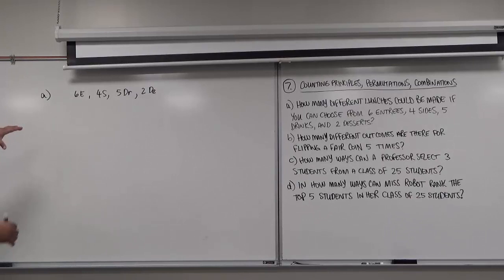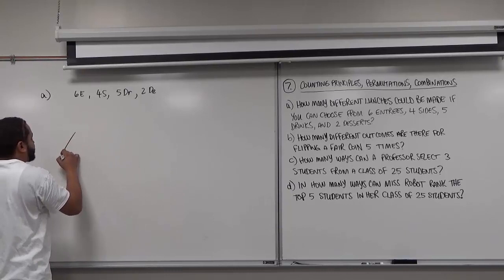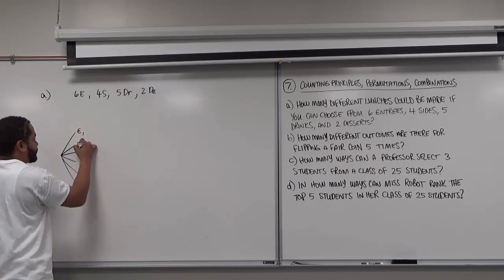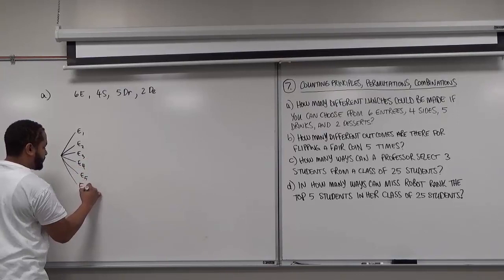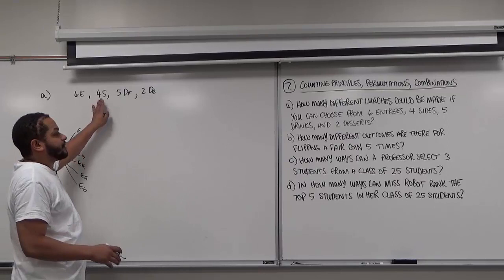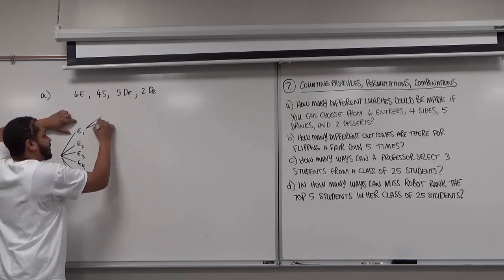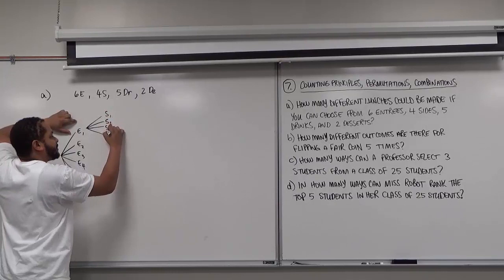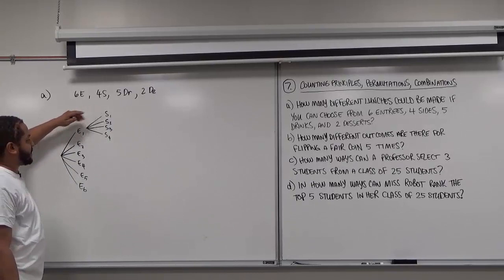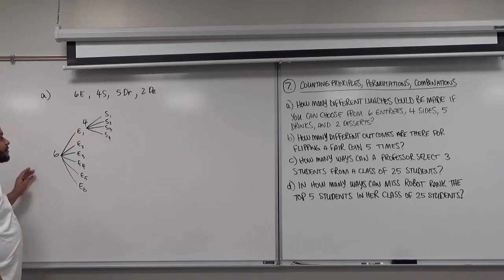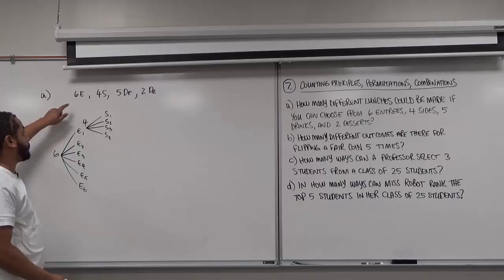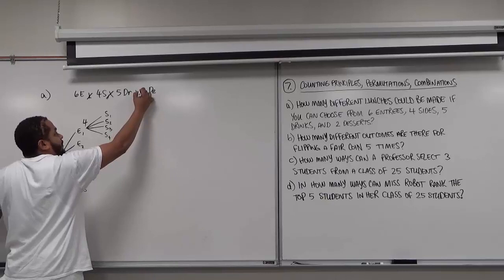If we have 6 entrees, we have 6 different ways we can pick an entree — entree 1, entree 2, entree 3, entree 4, entree 5, and entree 6. From each entree we could select a different amount of sides. We have 4 different options: side 1, side 2, side 3, side 4. Looking at entree 1 and the sides, there are 6 possible entrees and 4 possible sides. Instead of making a full tree diagram, we can just multiply the values for each.